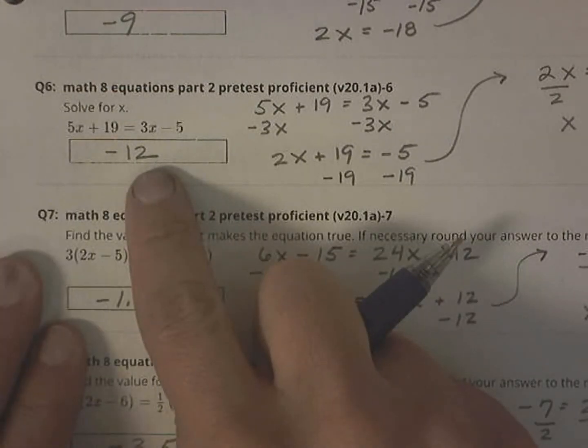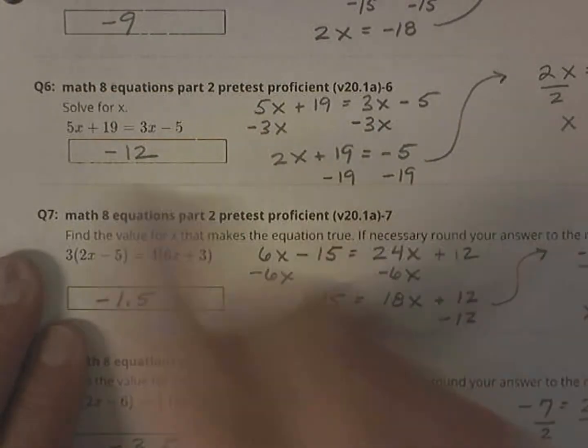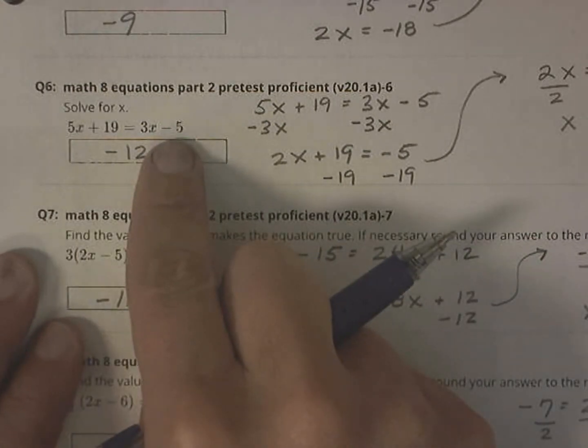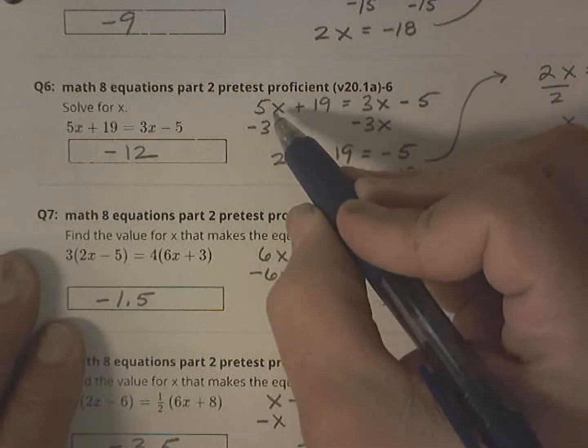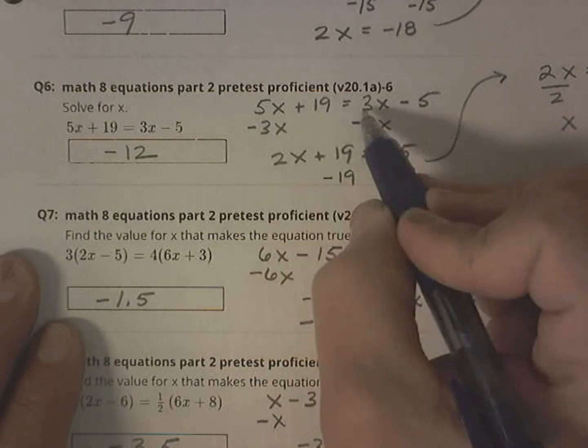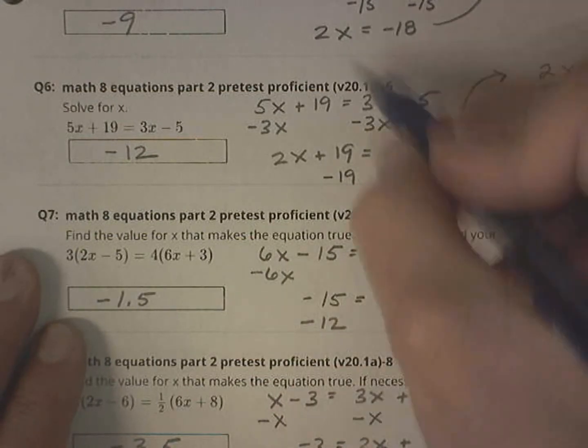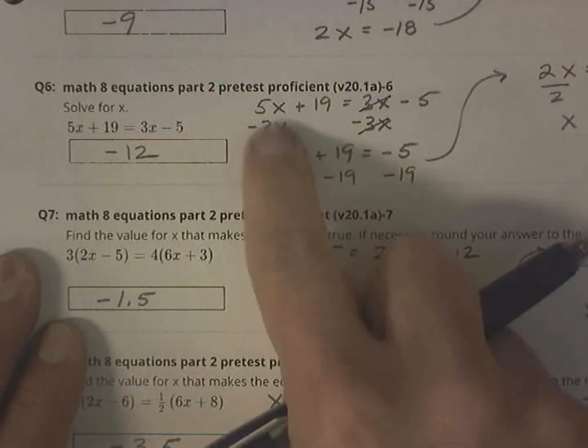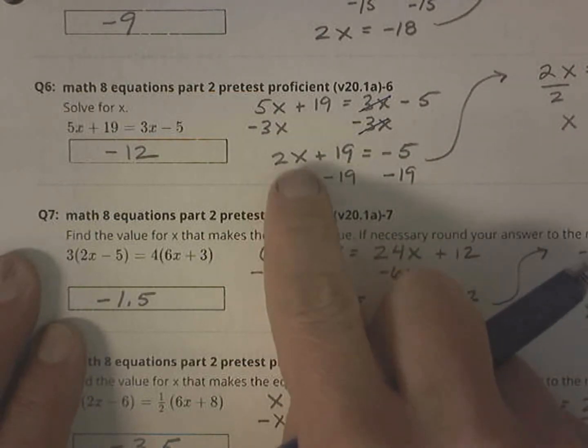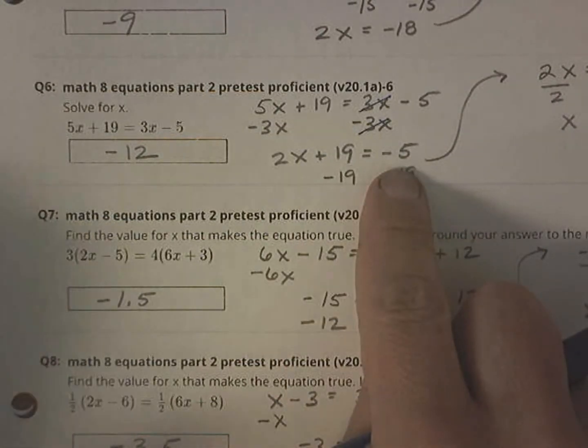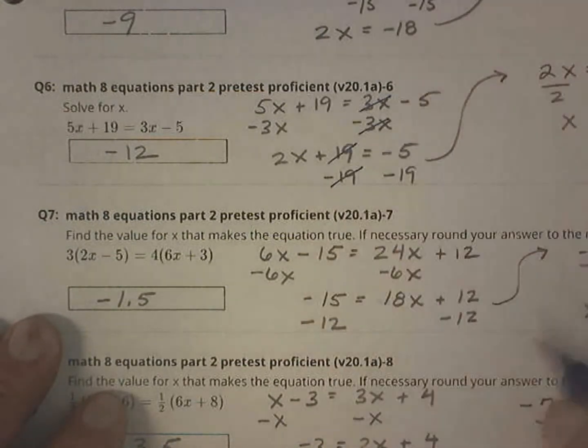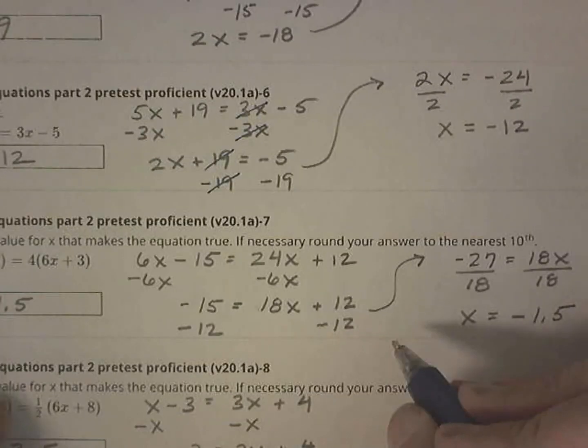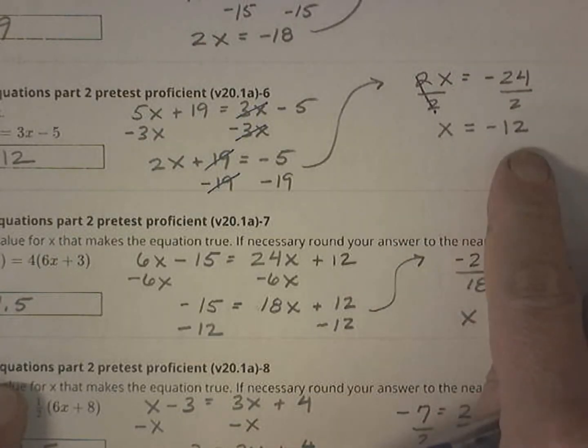This one. So notice here that I have variables on both sides of the equation. I prefer to subtract the 3x from both sides to keep my x's positive. You could have subtracted 5x from both sides. But I started with the 3x. They cancel out. 5x minus 3x is 2x, so now I have 2x plus 19 equals negative 5. It's a two-step equation. Subtracting 19 from both sides, these cancel out. Dividing both sides by 2, the 2s cancel out. x equals negative 12.